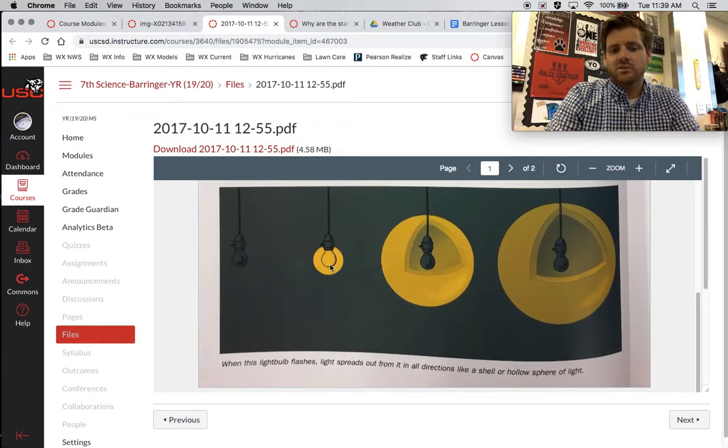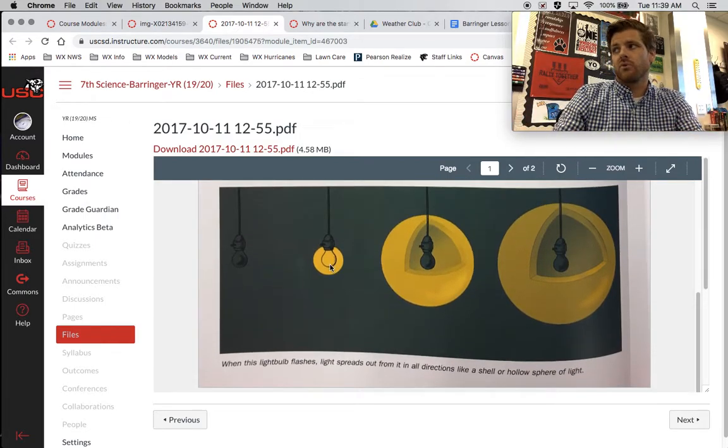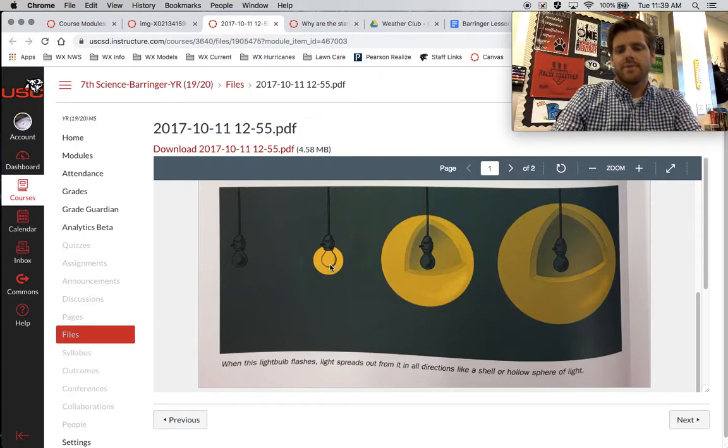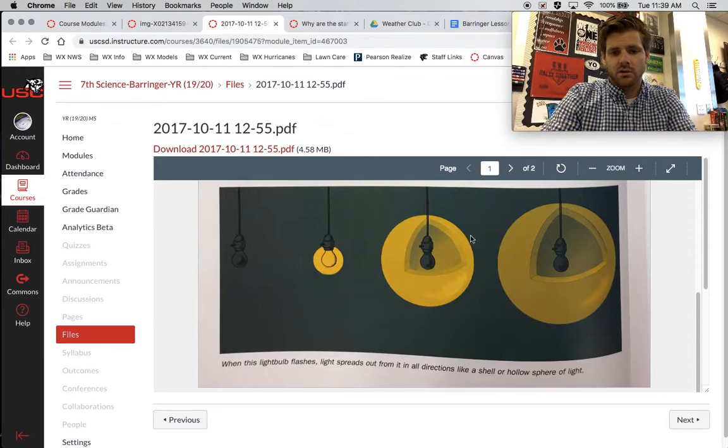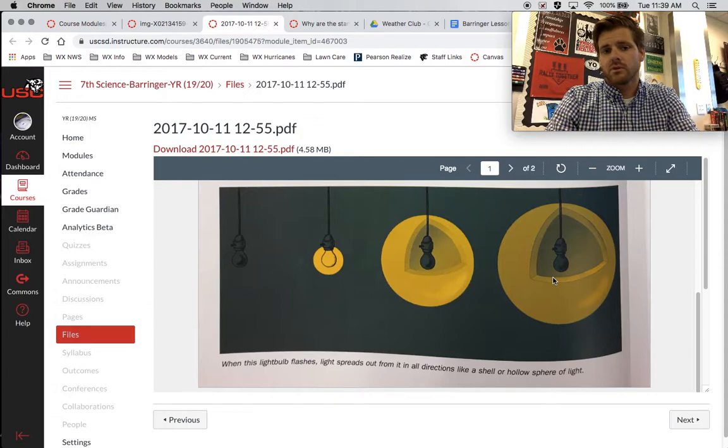So as the light goes further and further from the source, the light covers a bigger space. Just like we see here, a little bit further away, bigger, bigger, but also more dim.